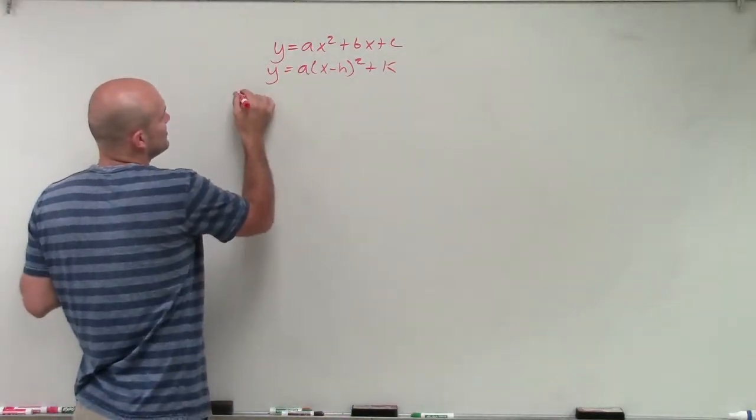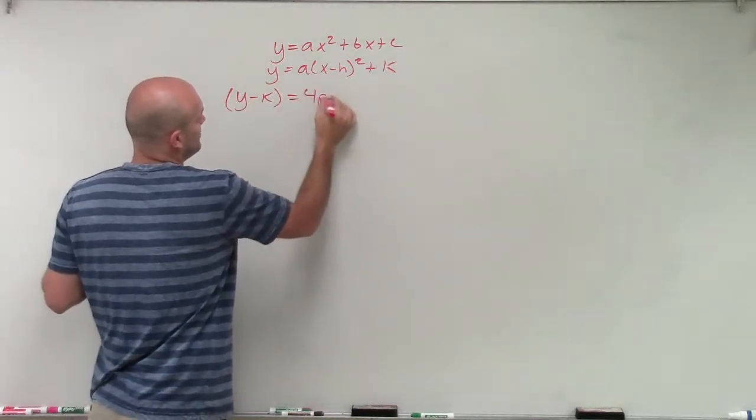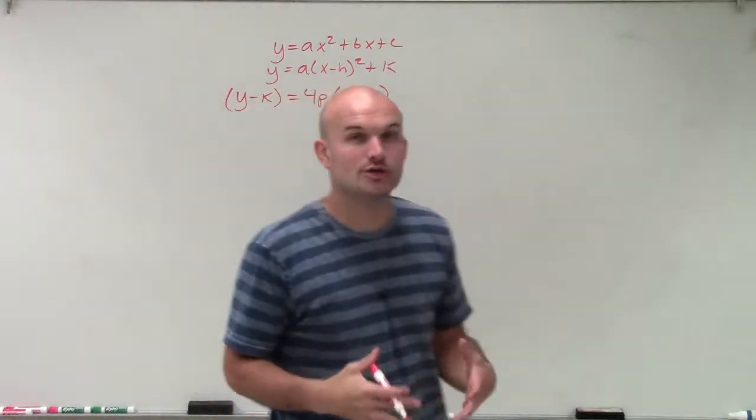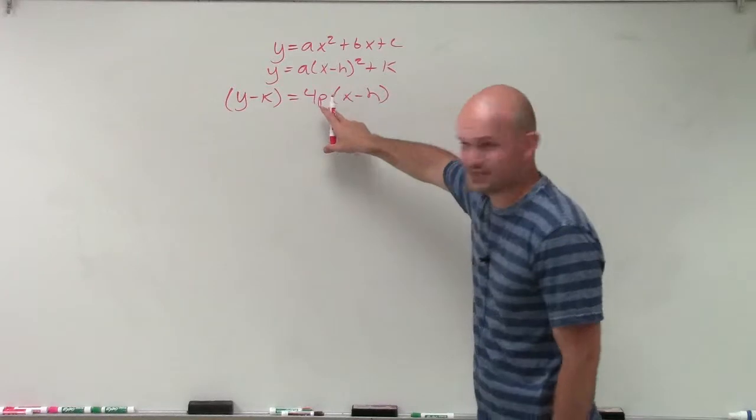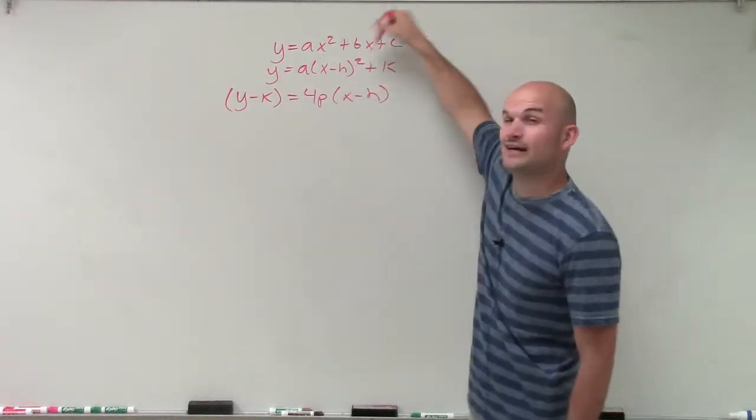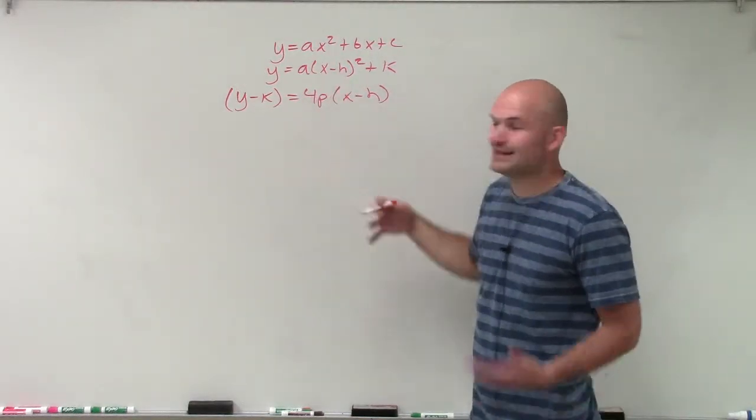So that equation we can represent as y minus k equals 4p times x minus h. And what I'm going to do is show you what exactly p represents, because that's a new one with the h and the k. Here h and k represent the vertex. But now what I'm going to do is what is this p value going to help us with.